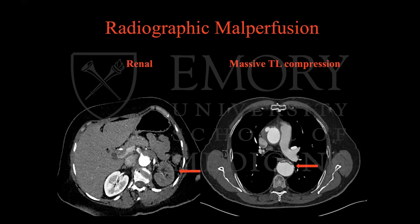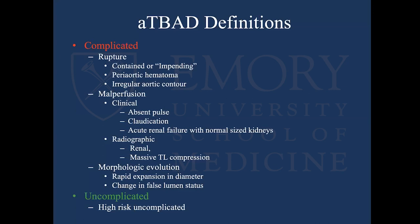If a patient comes in seemingly uncomplicated — no rupture, no malperfusion — we typically put them in the ICU, get their blood pressure under control, get them pain free. After 48 hours, we re-image them. If you see a rapid expansion in aortic diameter or a change in the false lumen status, that is an indication to stent these people. That's the complicated cohort. And then there's uncomplicated, including a cohort of patients with high-risk uncomplicated features.